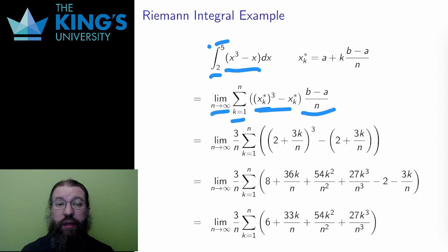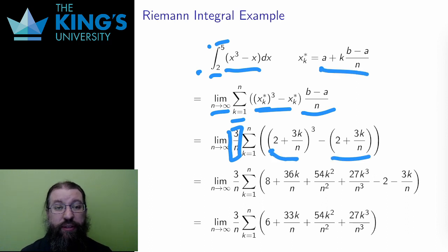In this case, b minus a is 5 minus 2, so 3, so b minus a over n is 3 over n. a is 2, so xk star, using the formula that I relied on in the last video, is 2 plus 3k over n. I put that in for both xk star places in the function.